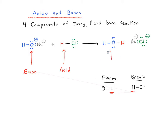Now what's being formed here — what's the relationship to the base? Well, it's the base plus a proton. So after the base has accepted our proton from the acid, what we call this is the conjugate acid. And likewise, when HCl loses a proton — notice we've got an extra lone pair on our chloride — we call this the conjugate base.